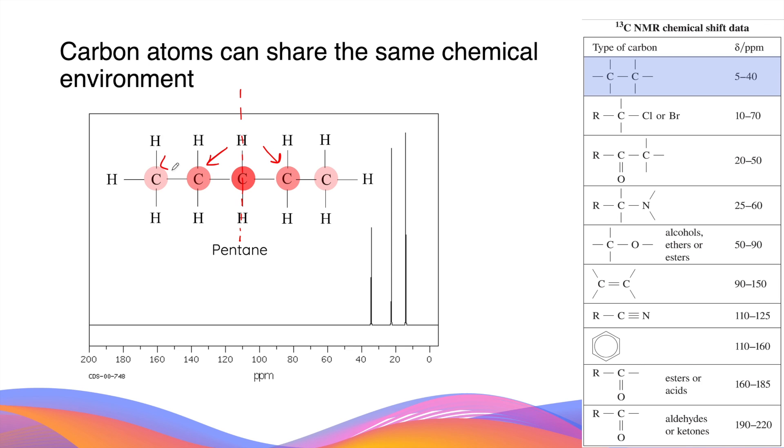By the same logic, the first and the fifth carbon atom are also affected by the symmetry, and therefore are in the same chemical environment. In the carbon-13 NMR spectrum, pentane will produce three different signals, which suggest it has three chemical environments.